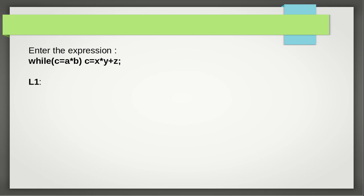First we will create one label, that is L1. L1 is generated whenever we encounter the while keyword. If the while keyword is not present — for example, if we wrote while1 — then that means it is an error in the input and it will give an error. So L1 is generated after the while keyword. Next, this is a three address code of this expression.